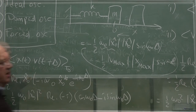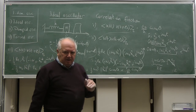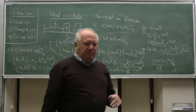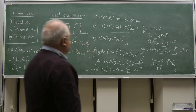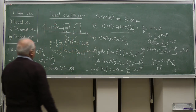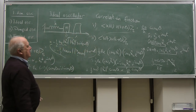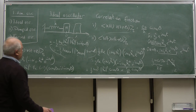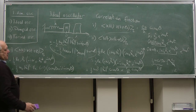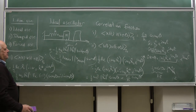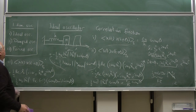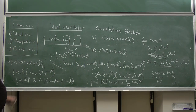These correlation functions are very important in electrical circuitry, for example in RLC circuits, which are themselves very good oscillators and fall into the same category. We will talk more about this next time.